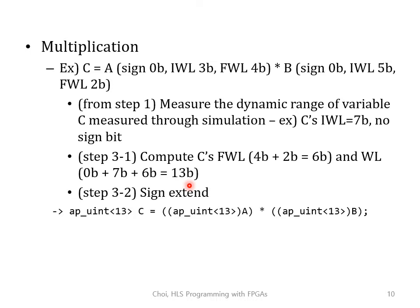Then we write down the C code. After sign extension, variable C has no sign bit, so the type we are going to use is APUINT<13>, and we typecast variables A and B to APUINT<13>. Finally, you may choose to do rounding.